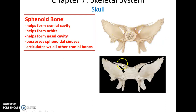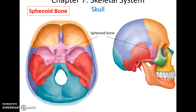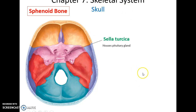The sphenoid bone is a funny-shaped bone that looks like a butterfly or a bat. It helps form the floor of the cranial cavity, the posterior wall of the orbit, and much of the nasal cavity. It possesses the sphenoidal sinuses and articulates with all of the other cranial bones. A depression called the sella turcica houses the pituitary gland.